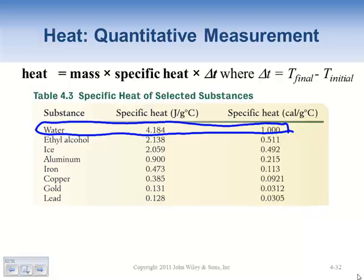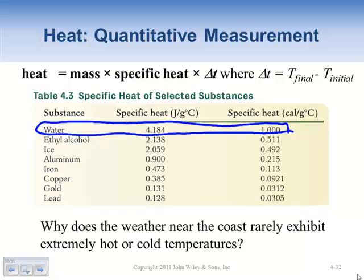Why does weather near the coast rarely exhibit extreme heat or cold? Water has a tendency to absorb heat - it's a good heat sink. It takes a while to boil water because water absorbs heat so well. Those temperature changes are less impactful on the environment because water absorbs some of those extreme changes.